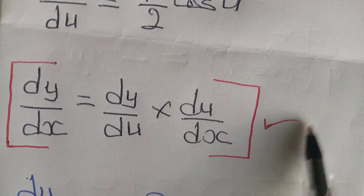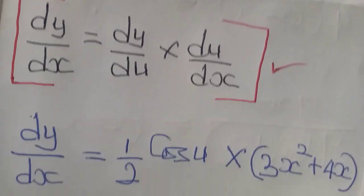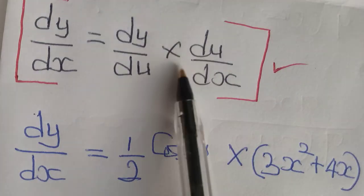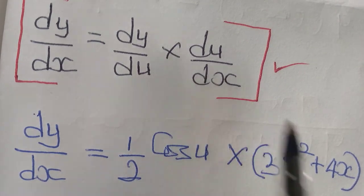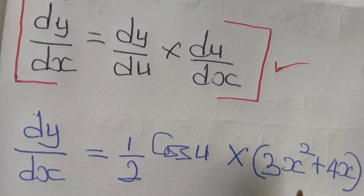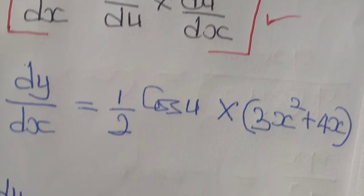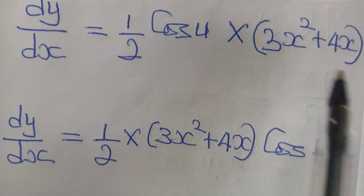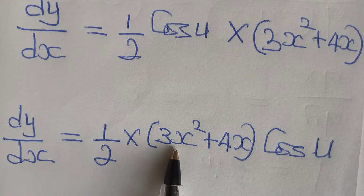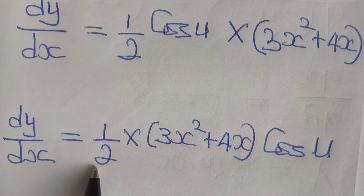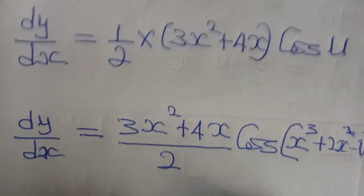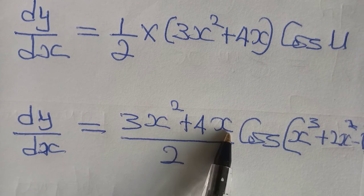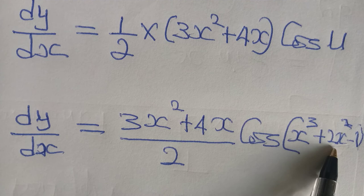The two differentials you had so far, just multiply them. It's a very straightforward rule. So bringing in my variables, I will have dy/dx equals to 1 over 2 cos u — that is dy/du — times du/dx, which is 3x squared plus 4x. So I'll just multiply the two and whatever I have is my differential. That gives dy/dx equals to (3x squared plus 4x) over 2 times cos(x cubed plus 2x squared minus 1).